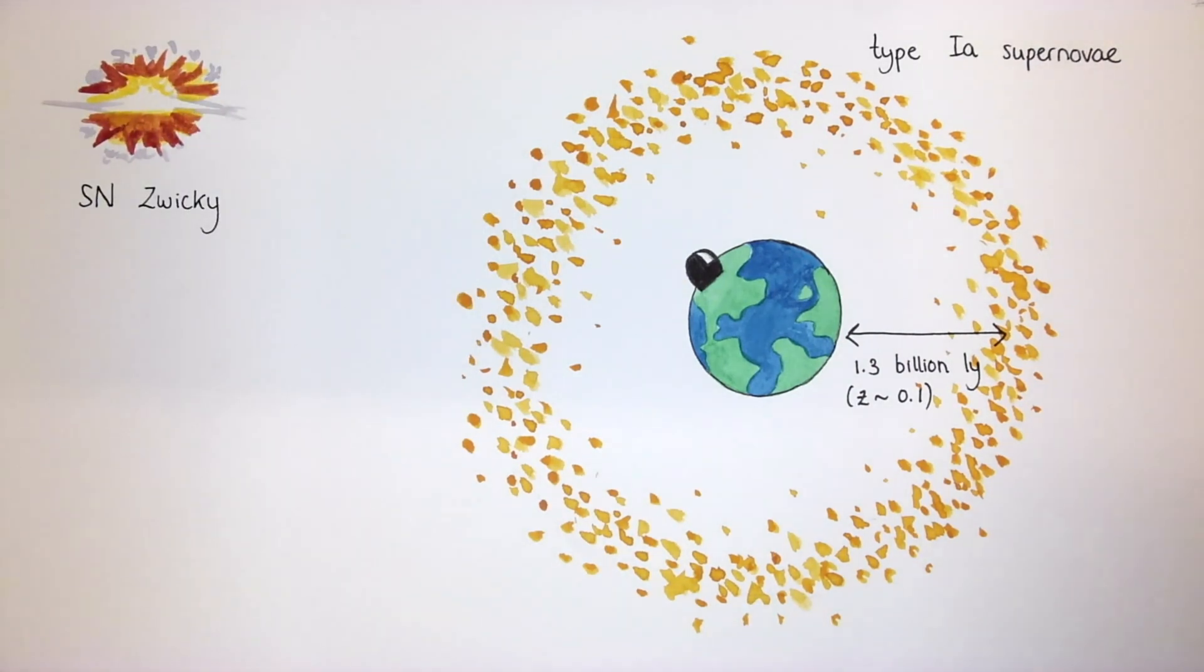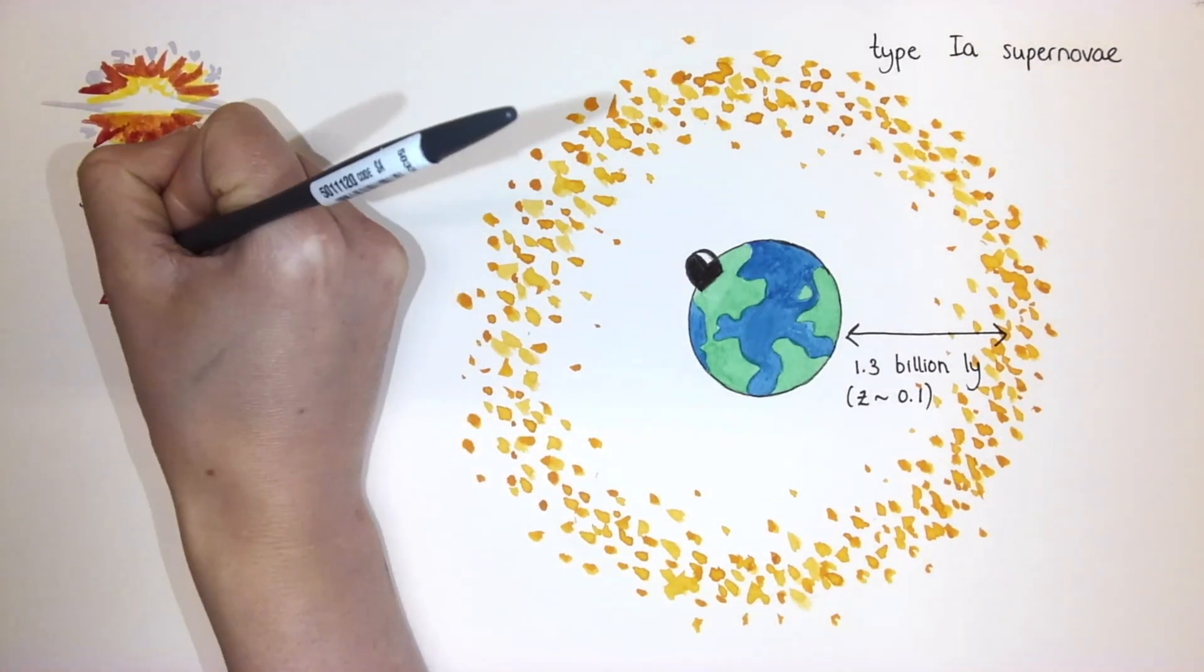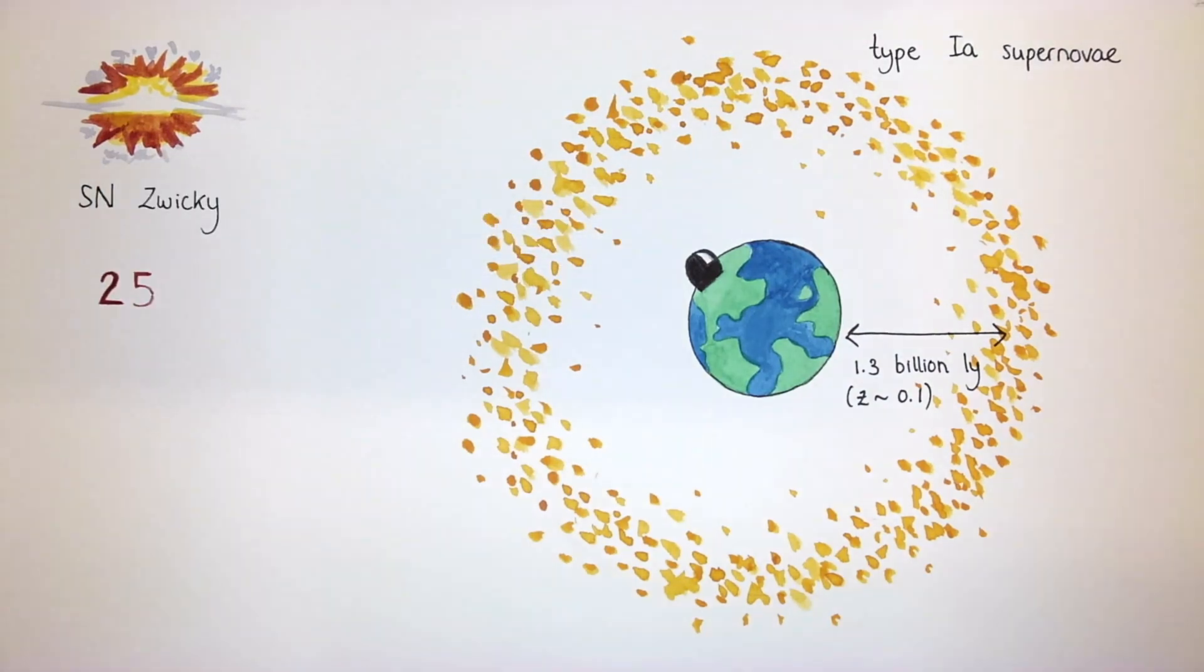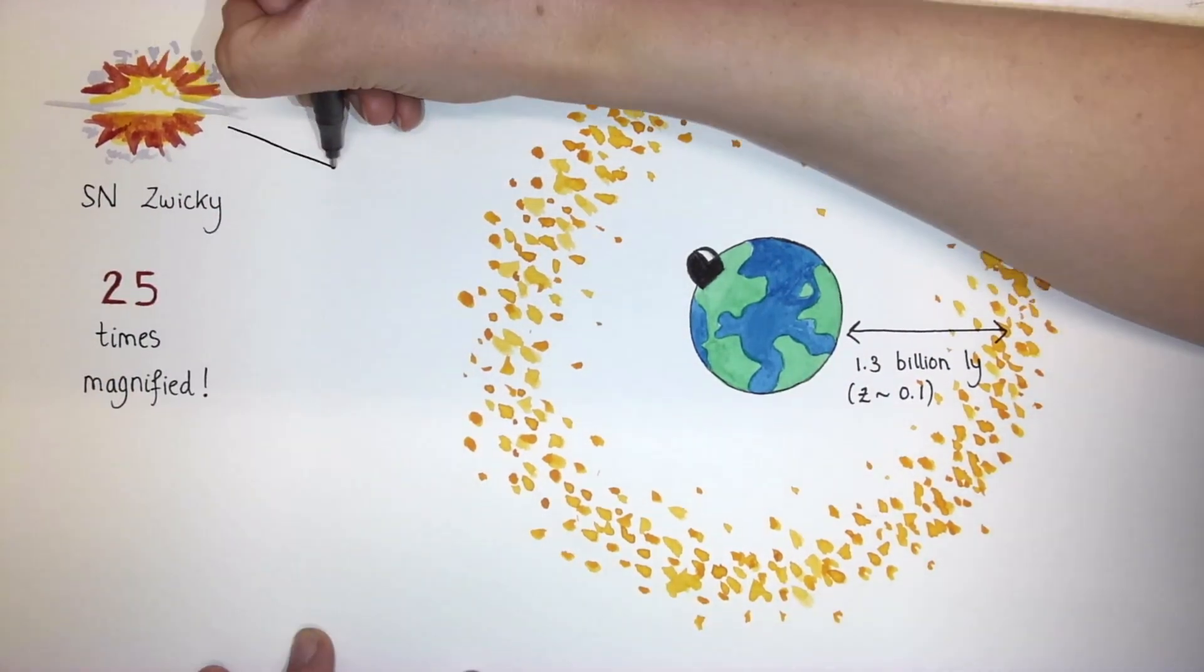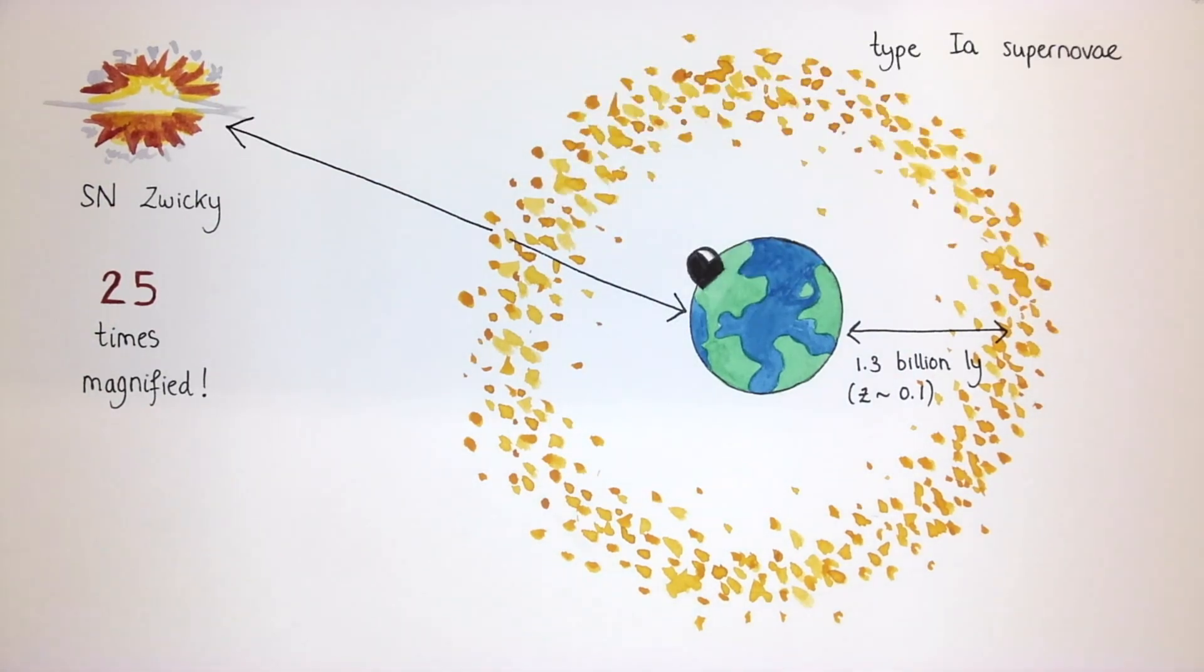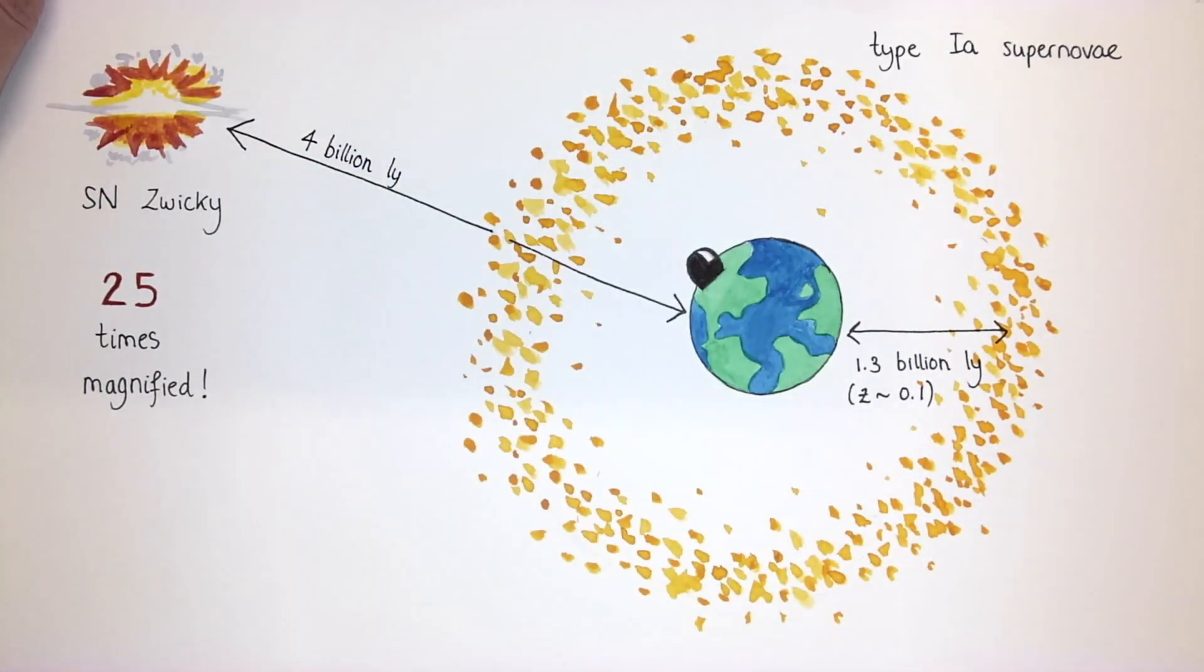Gravitational lensing made this incredible discovery possible. The lens galaxy acted as a cosmic magnifying glass, and made Supernova Zwicky 25 times as bright. That's how we can observe it at a distance of almost 4 billion light-years, or a redshift of 0.35.